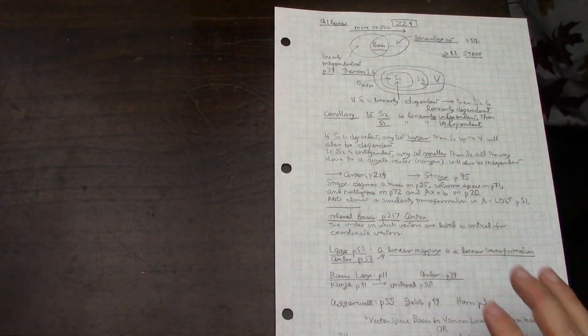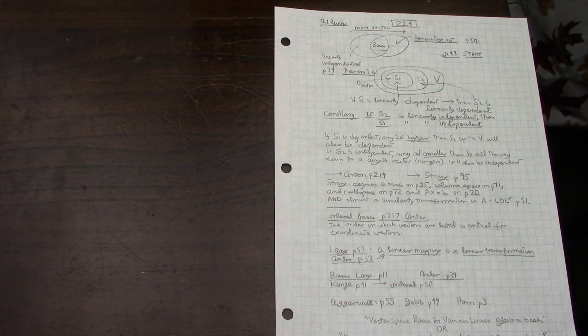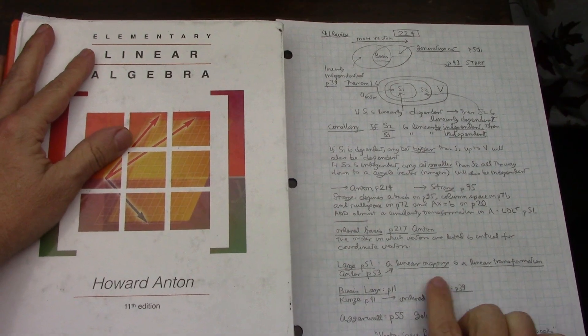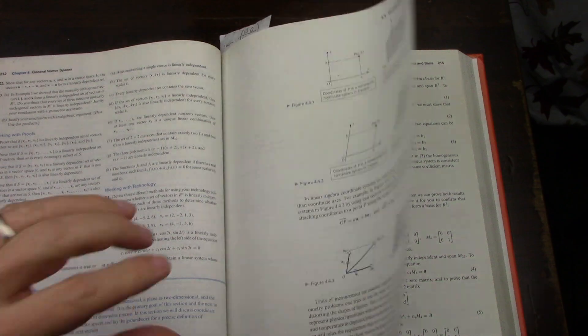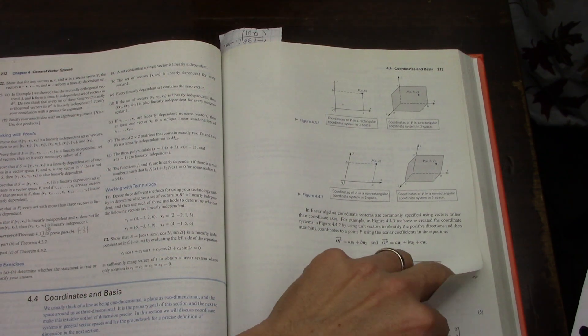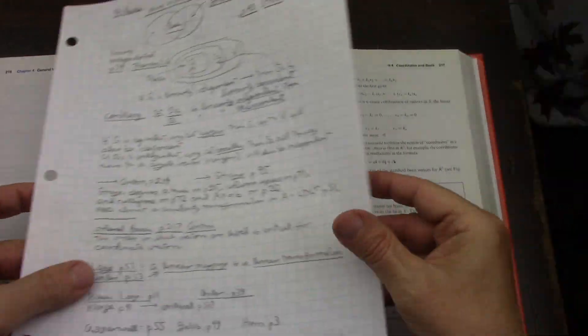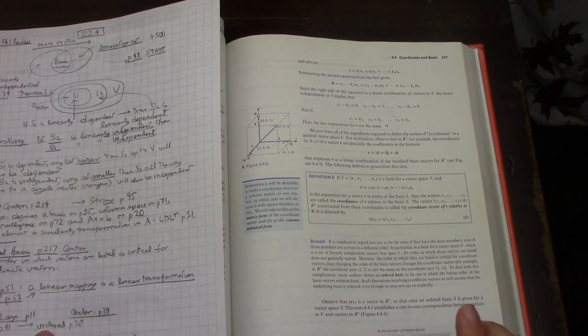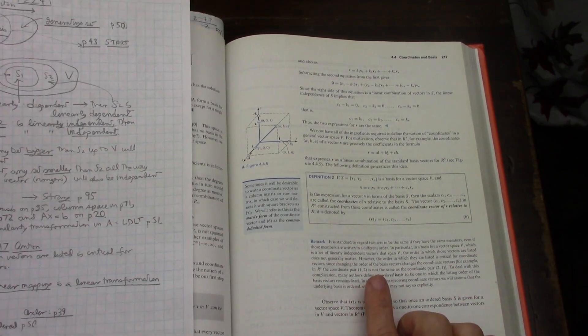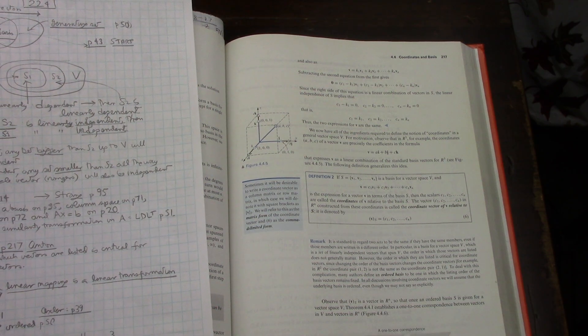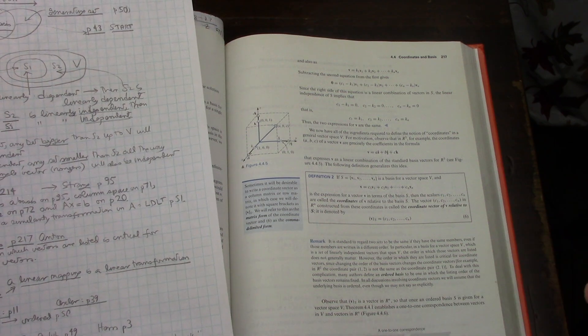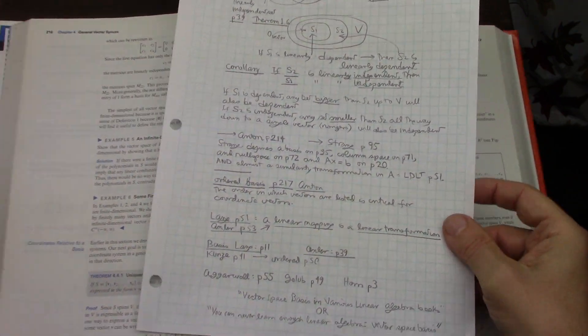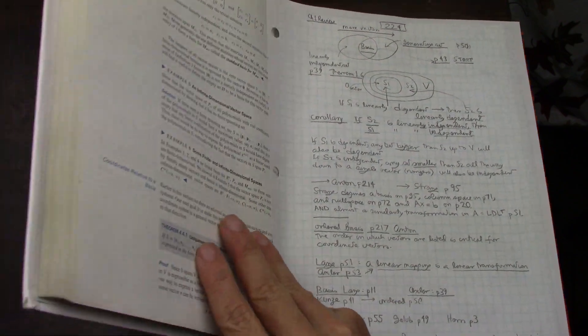The next thing is ordered basis. In the case of Anton, he talks about it in an interesting way on page 217. It's almost like an in-passing remark, but he says something interesting: the order in which vectors are listed is critical for coordinate vectors. That's the reason why you need an ordered basis. So now let's go to the theory books, or I would say the math major books.